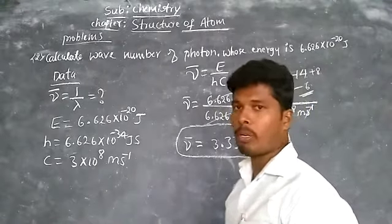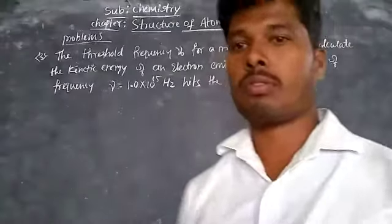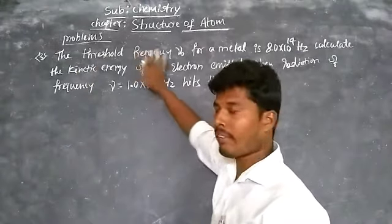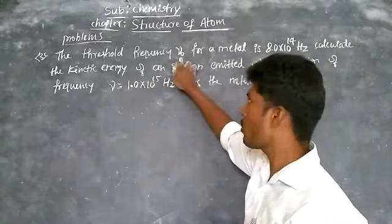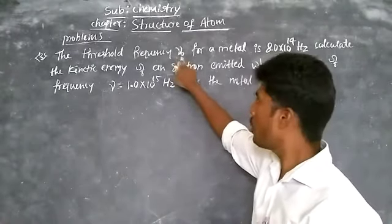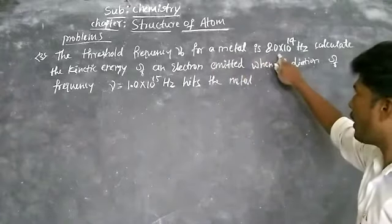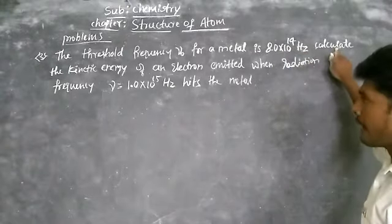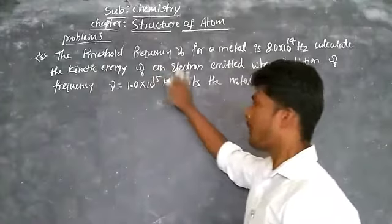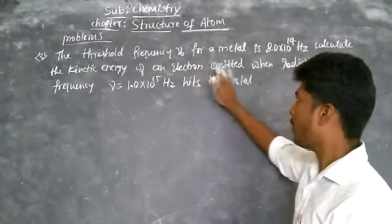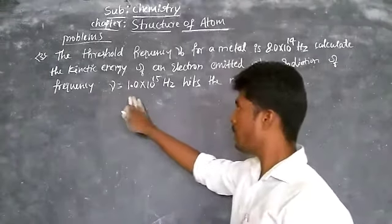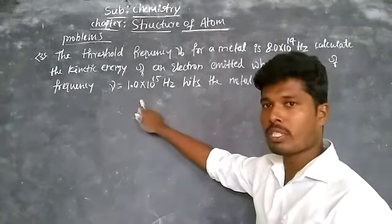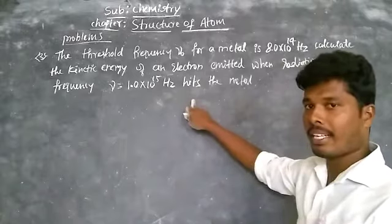Similarly, we will take one more problem. This is the next problem about the threshold frequency, which is nu-naught. Threshold energy is h·nu-naught. Threshold frequency for a metal is 8.0 × 10¹⁴ hertz. Calculate the kinetic energy of an electron emitted when radiation of frequency nu equals 1.0 × 10¹⁵ hertz hits the metal.